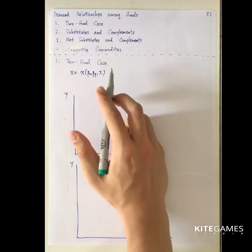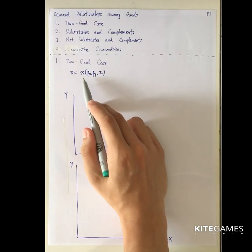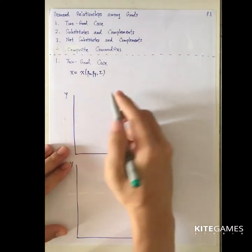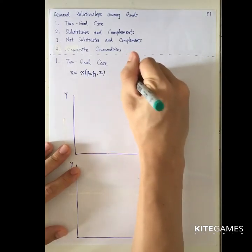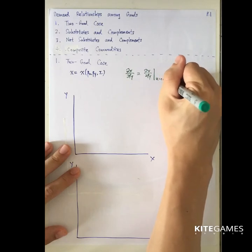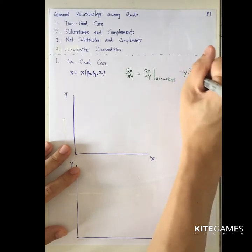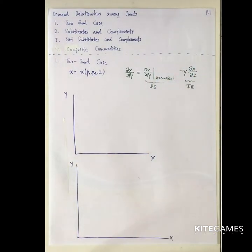First, it is the two-good case. This is a usual demand function. Before this video, we have taken a look at what will happen if the price of X changes — this will trigger the substitution effect and income effect. So the similar situation will happen in the cross-price case. So ∂X/∂P_Y is equal to ∂X/∂P_Y given U is constant, minus Y times ∂X/∂I. This is the substitution effect and this is the income effect. Both a change in the price of good X and Y will trigger two effects: one is called substitution and one is called income effect.